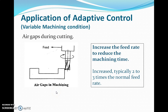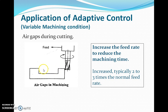The fourth condition is air gaps during cutting. As shown in the figure, when machining a C-channel workpiece, the tool experiences cutting forces over solid sections. When the tool reaches an air gap — where no material is present — the machine should recognize this and increase the feed rate to reduce machining time. The feed rate in air gaps can generally increase two to three times the normal feed rate under adaptive control.